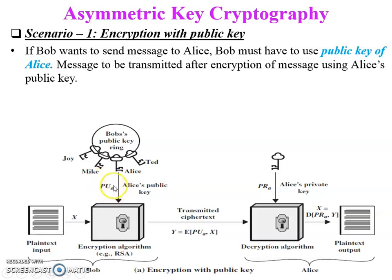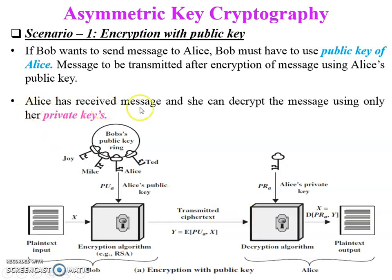Ciphertext is the unreadable message produced by the encryption algorithm. The decryption algorithm takes the ciphertext and the key as input and produces the original plain text. The encryption algorithm is executed at the sender side and the decryption algorithm at the receiver side. The key can be either public or private for both encryption and decryption.